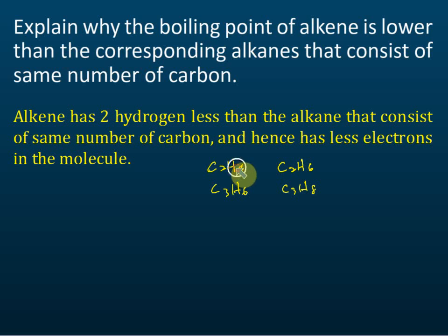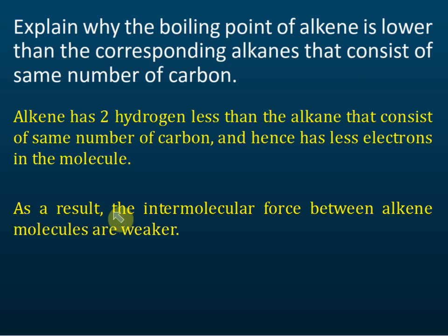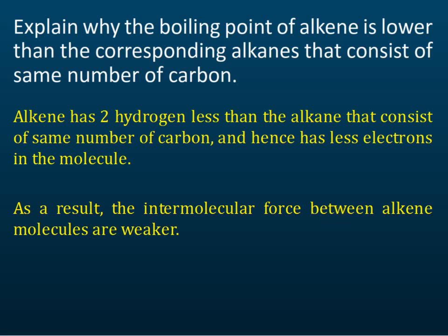Because alkenes have fewer hydrogens, they have fewer electrons. The van der Waals intermolecular force depends on the number of electrons. So the intermolecular force between alkene molecules is weaker, and therefore less energy is needed to overcome the intermolecular force during boiling. That is why alkenes have lower boiling and melting points compared to alkanes — fewer hydrogens means fewer electrons and weaker intermolecular forces.